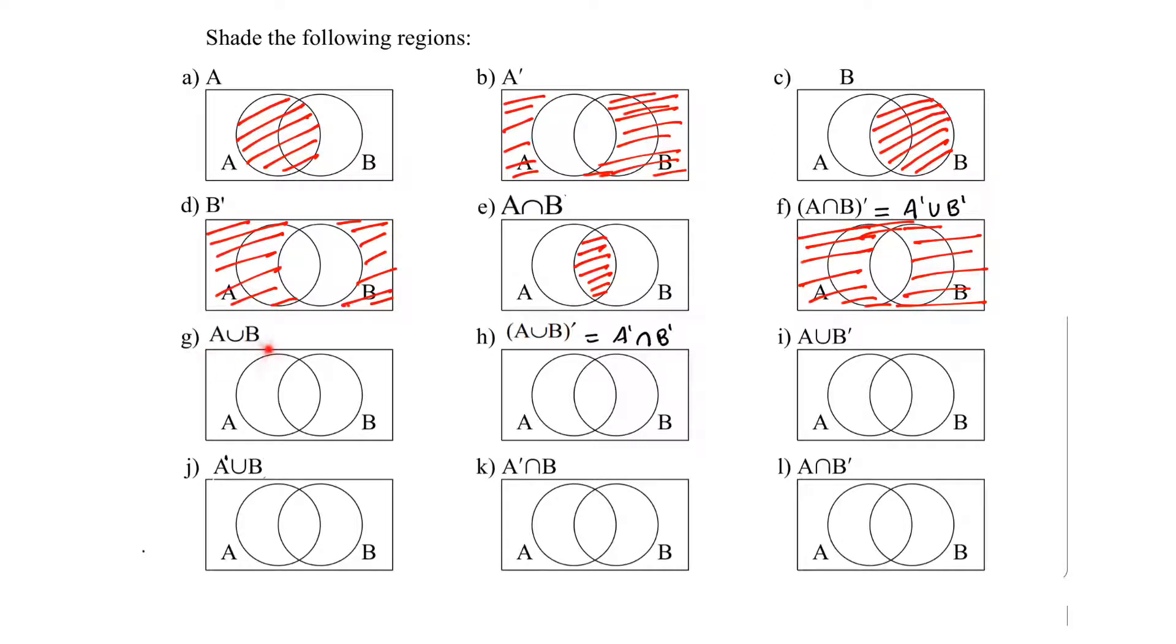A union B. A union B means elements can be in only A or only in B or can be in both. So both the circles will be shaded. If the word or is used it means union. So we shaded both the circles here.